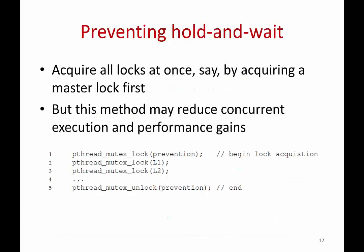Another technique is to avoid hold-and-wait by using one large coarse-grained lock that every thread must acquire before doing any other lock acquisitions. This prevents the situation where a thread holds some locks while waiting for others. The downside is that it may reduce concurrency, but it eliminates the possibility of deadlock.